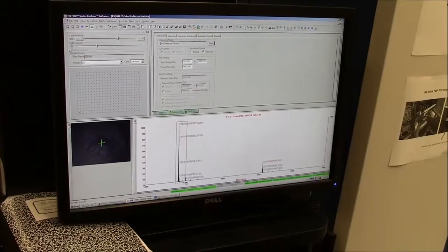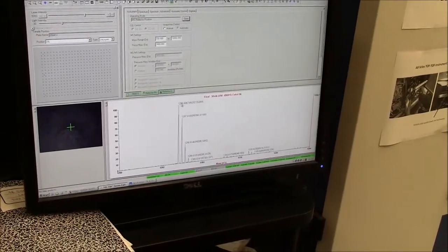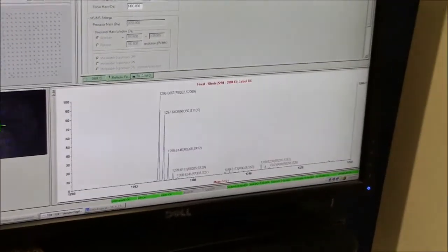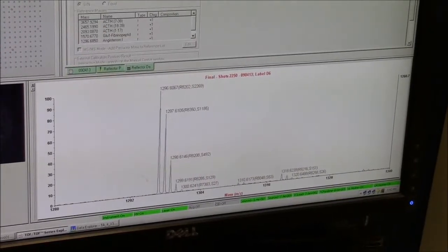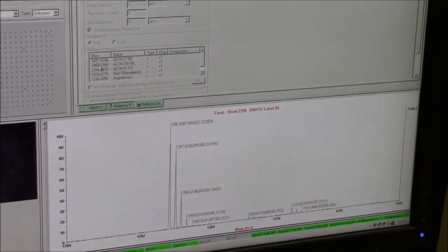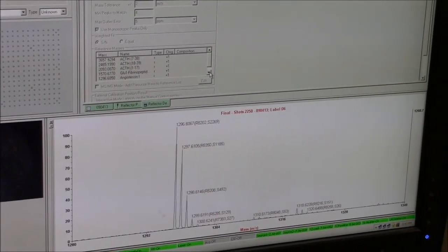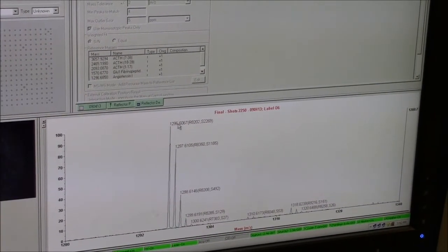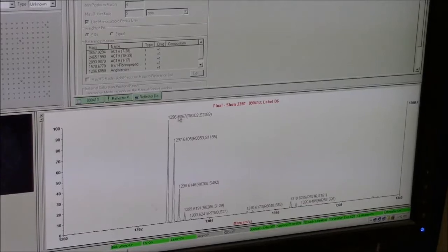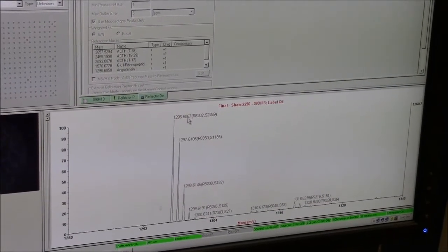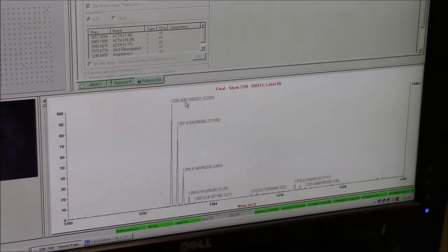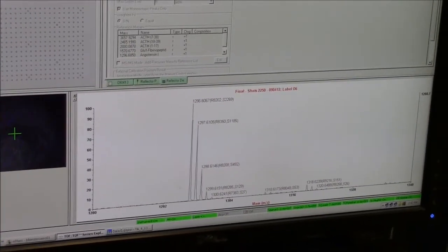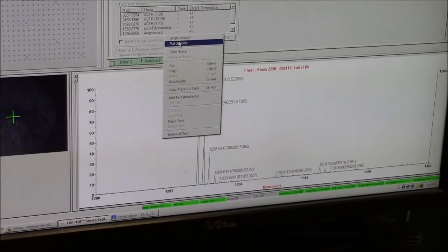You can check that it's a single charge state. If you go into here, you can see I have my calibration standards. So this is angiotensin 1, right? Uncalibrated. Even uncalibrated, this instrument is within a 0.1 Dalton. So it's a pretty sharp instrument. So that's pretty nice.